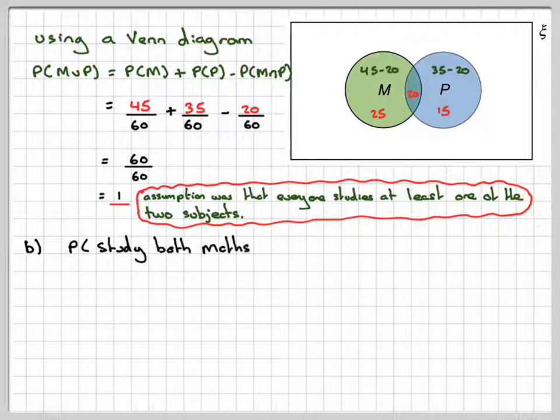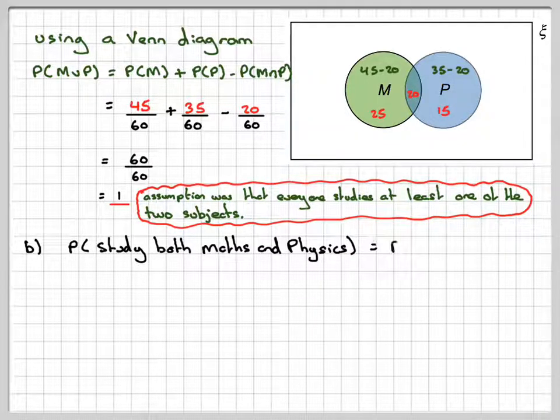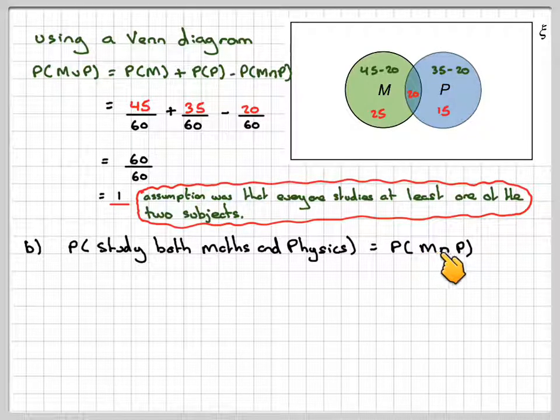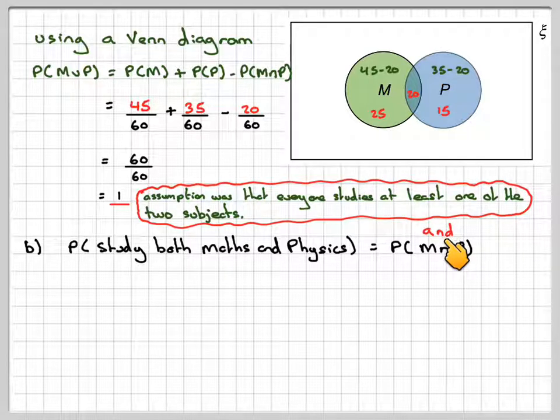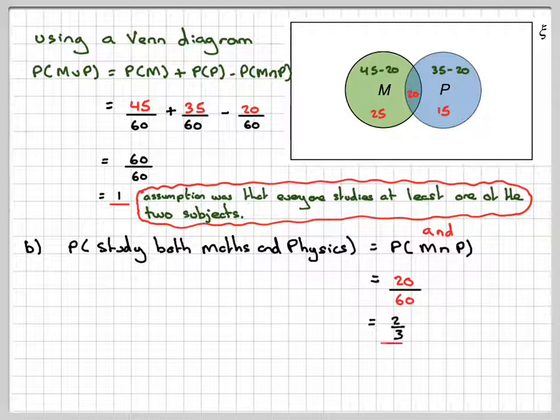The probability that they study both maths and physics, well, that's just going to be the intersection. So the set notation, probability of M and is the correct term here, P. So in English, the intersection generally means and. We get 20 over 60, which is 2 thirds.